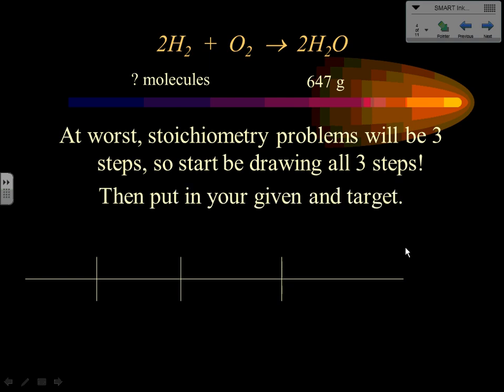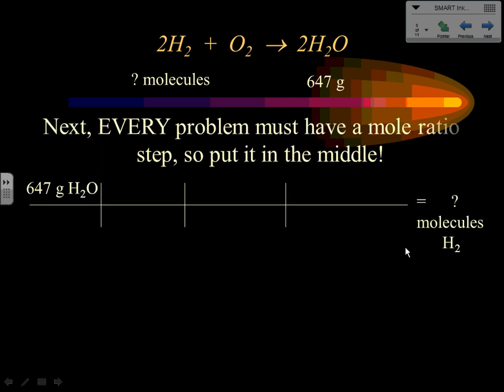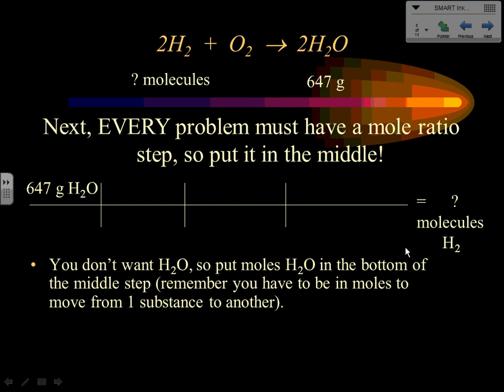Once you've got your workspace, put in your given and your target: 647 grams of water, and we want to know how many molecules of hydrogen. The key is that every stoichiometry problem must have the mole ratio step. We always do that middle step first, because doing it first helps us figure out what to do in steps one and three. Start in the middle: put water on the bottom — we're getting rid of it — and we must be in moles.